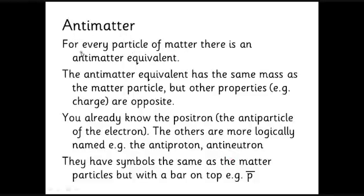Every type of matter particle has an antimatter equivalent. Importantly, antimatter has the same mass — there are no negative masses involved. An electron and a positron both have the same mass: 9.1 × 10⁻³¹ kilograms. But other properties are opposite. We already know a positron is positively charged — it's an antimatter particle very much like the electron with the same mass but opposite charge.